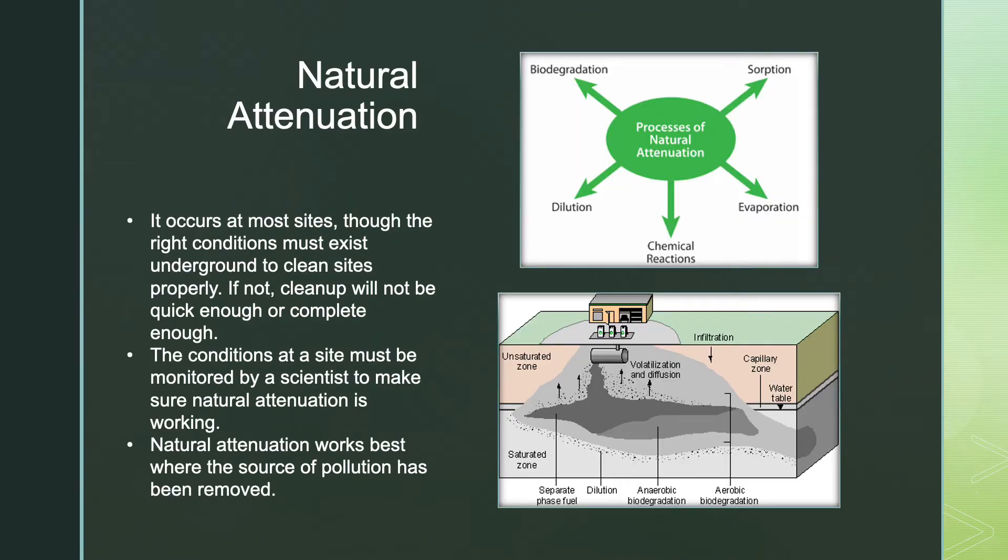So basically, natural attenuation relies on natural processes to clean up or attenuate pollution in soil and in groundwater. Natural attenuation does actually occur at most polluted sites. However, the right conditions must exist underground to clean these sites properly. And if not, the cleanup will not be quick enough or it will not be complete enough. Scientists monitor or test these conditions to make sure that the natural attenuation is actually working. And this is called monitored natural attenuation, or MNA.